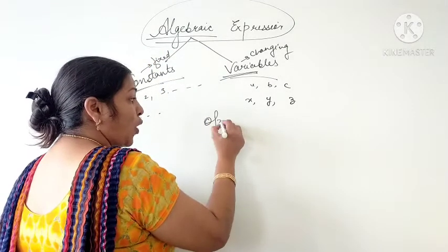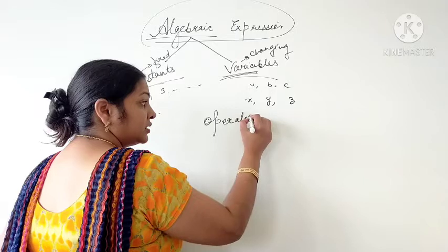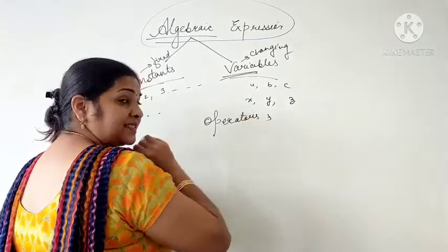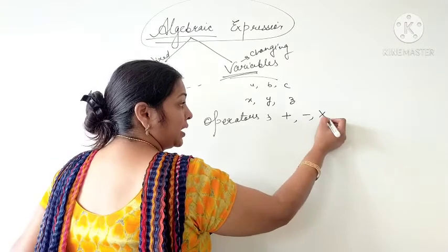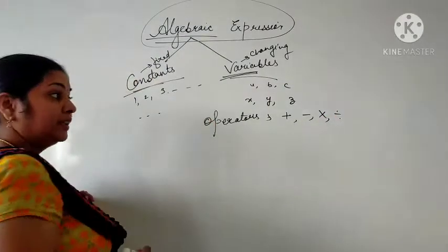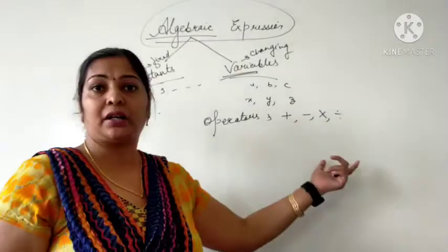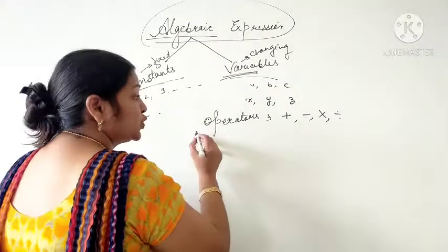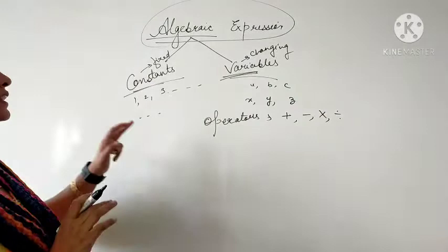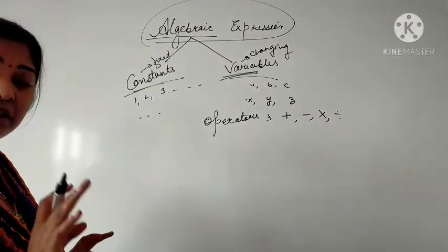When these are joined by some operators. What are operators? The basic fundamental operators are plus, minus, multiply, divide. These are the basic fundamental operators. When these constants and variables are joined by these operators, then an Algebraic Expression is formed.